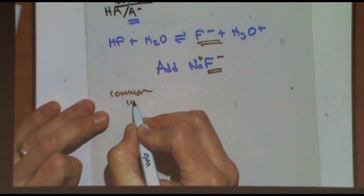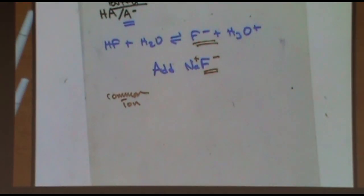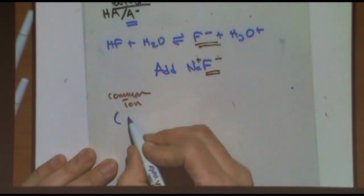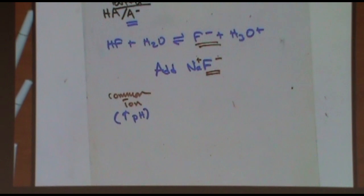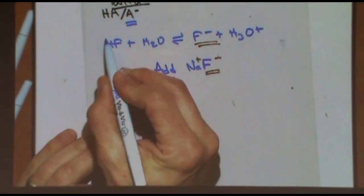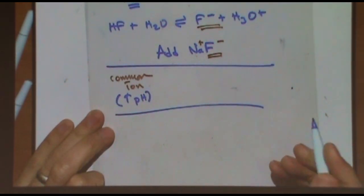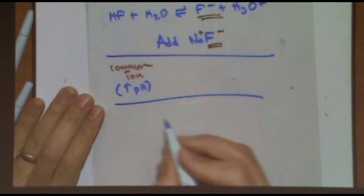What does the common ion do? There are two ways of thinking about it, but the net effect is it raises the pH. First: adding F⁻ shifts the reaction to the left, dropping the H₃O⁺ concentration, which raises the pH. Second: F⁻ is a base — it's the conjugate base — so adding a base means the pH goes up. Either way, adding the common ion, which creates a buffer, raises the pH.